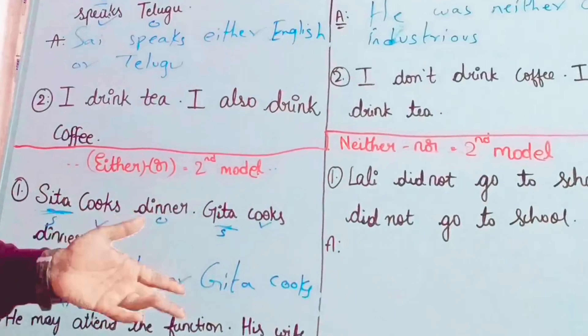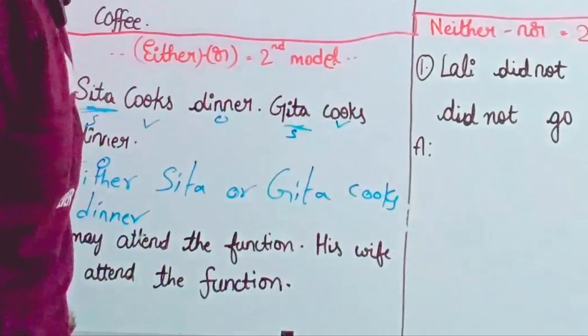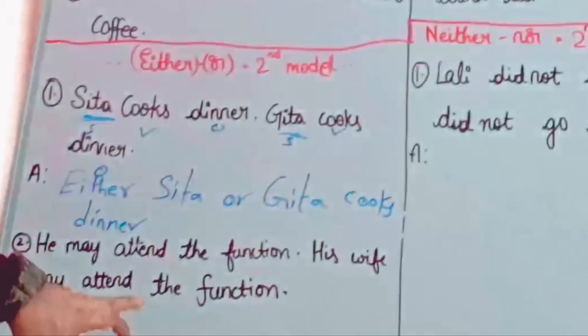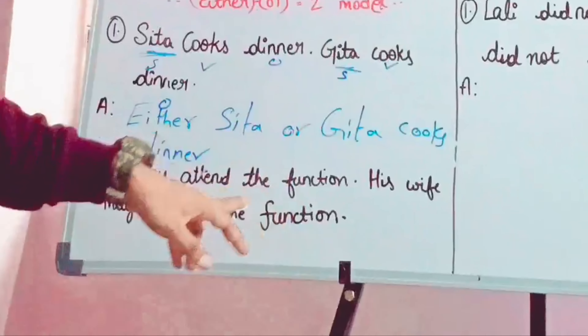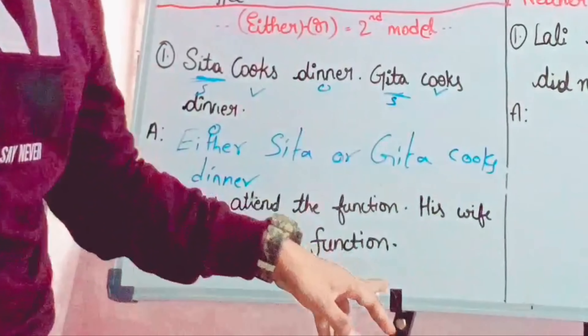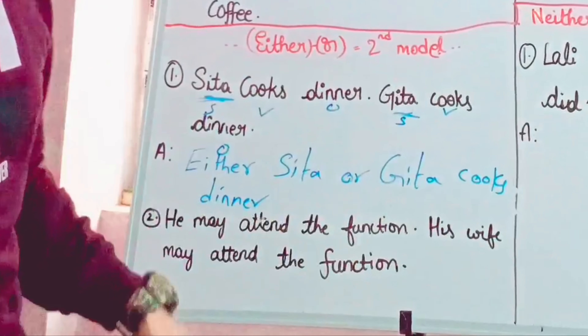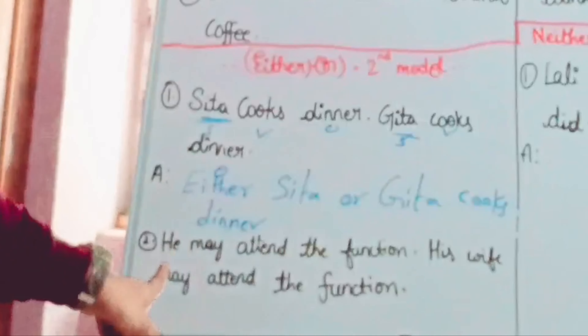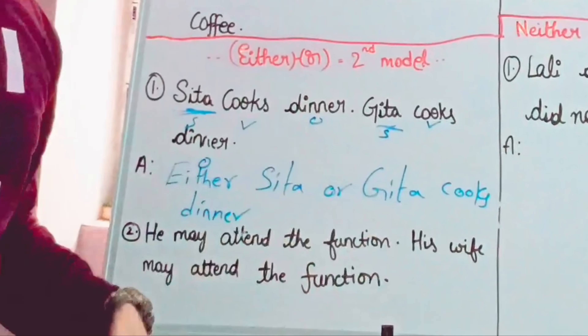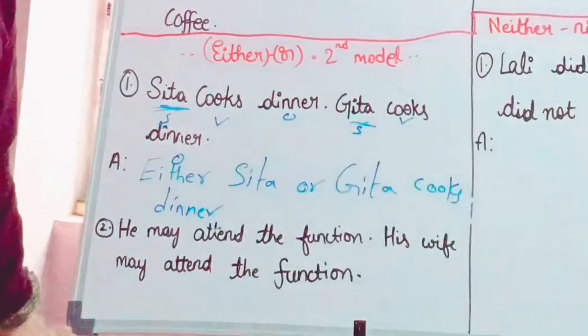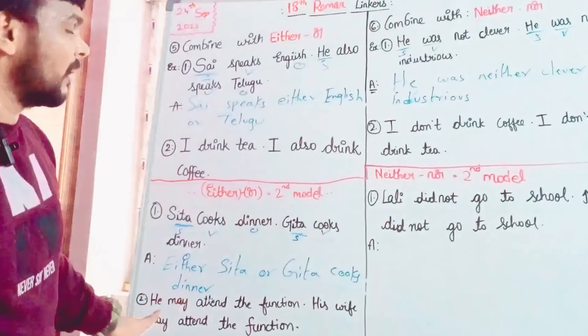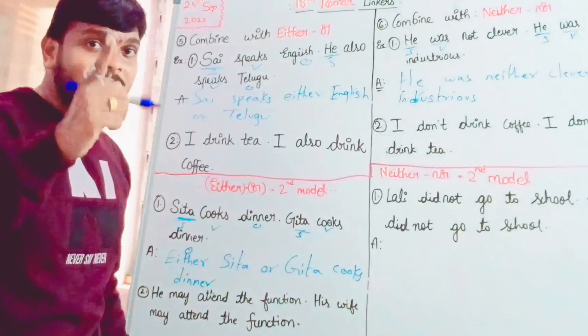Cooks dinner. Either Seta or Geta cooks dinner. Same — this is homework. His wife may attend the function. You have to write it — right or wrong.